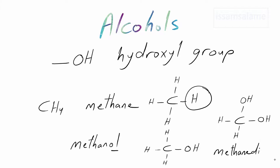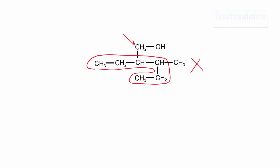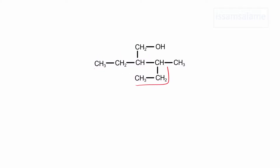We kept the -e and added -diol. Now let's start naming branched alcohols. For this compound, if you think the longest chain does not include the carbon joined to the hydroxyl group, you made a mistake, because hydroxyl groups have priority over alkyl groups and must be included in the longest chain.